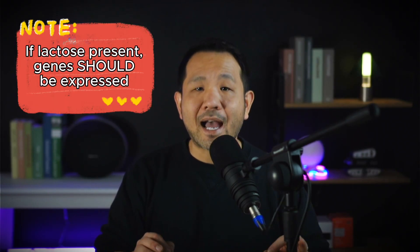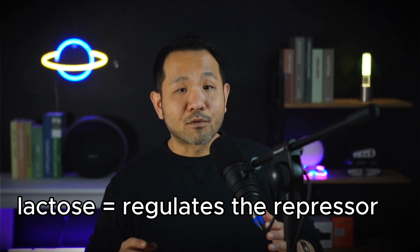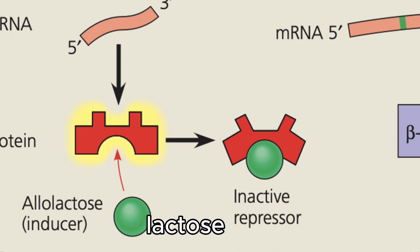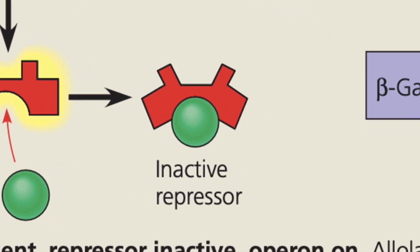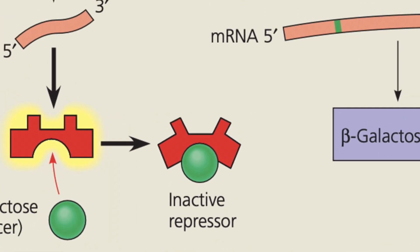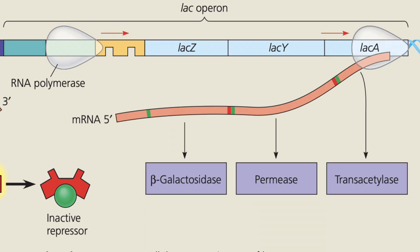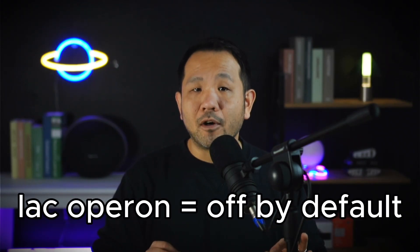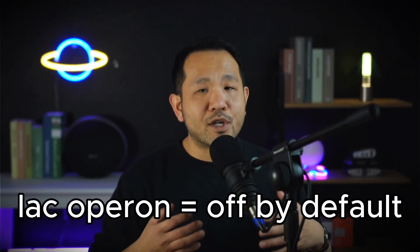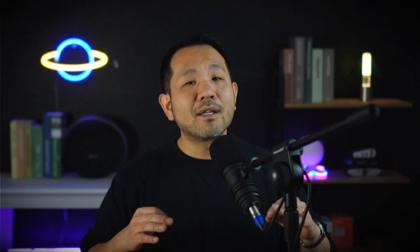When lactose is found in the cytoplasm, it acts like an allosteric regulator of the lac repressor protein. With numerous lactose molecules present, some bind to the repressor proteins, changing their shape so they can no longer bind to the lac operator. Without any repressors in the way, RNA polymerase can now transcribe all three structural genes, which cooperate in digesting lactose into simpler sugars the cell can metabolize. This operon is off by default but can be induced into transcription by an environmental stimulus — making it an inducible operon.